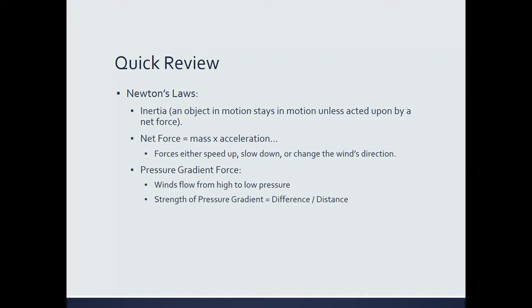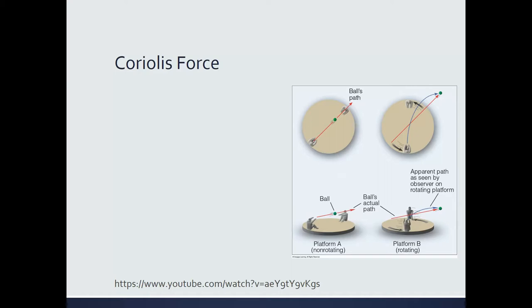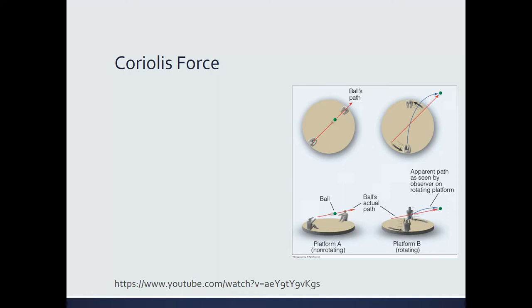Where isobars are far apart, that represents a region of low pressure gradient and hence weak winds. But once the winds begin to accelerate due to the pressure gradient force, something else begins to happen. If you've looked at a weather map, a time-lapse satellite image, or a hurricane, you'd notice a lot of swirling. As the air begins to accelerate, it starts to experience another force called the Coriolis force.